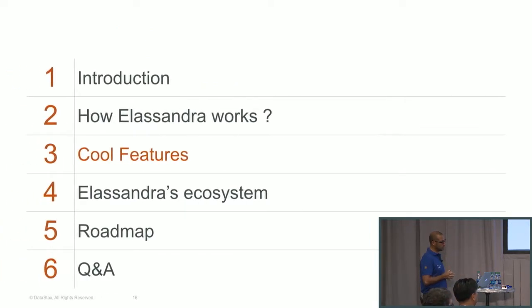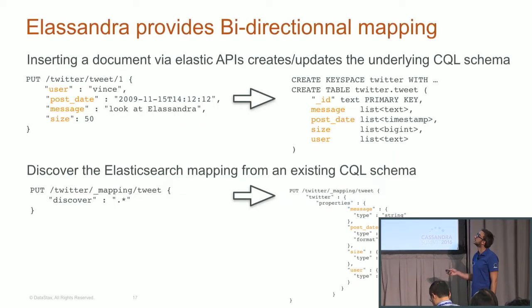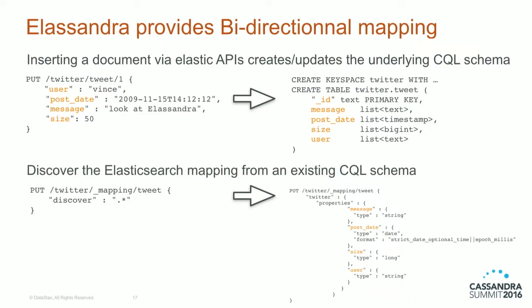Now we'll go through cool features introduced by Elasandra. From the beginning, the goal was to keep the Elasticsearch layer unchanged from the user perspective. Under the hood, on each mapping update, Elasandra automatically generates the CQL schema — you don't need to worry about it. You just use the Elasticsearch API. For example, indexing a tweet automatically generates the CQL schema. All fields are backed by a list type because by default Elasticsearch fields are multivalued, but you can also force the mapping to use a native type like a single string or integer.